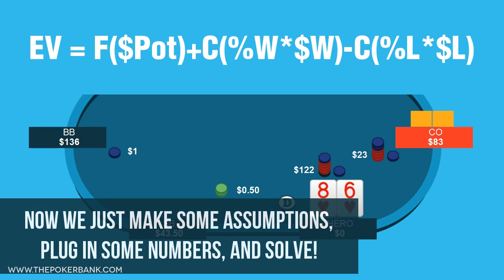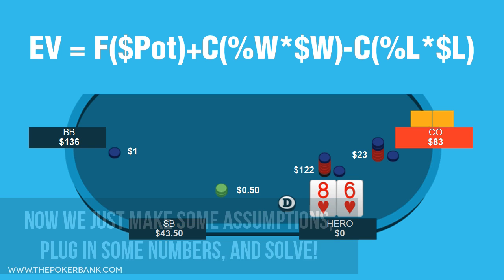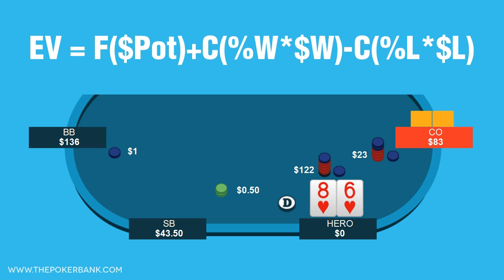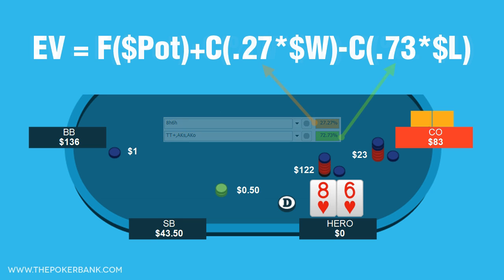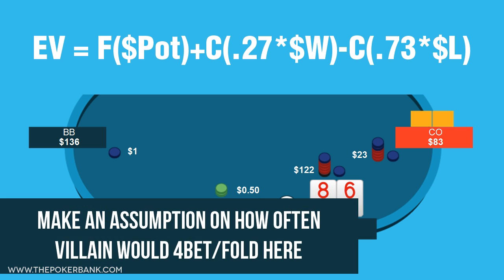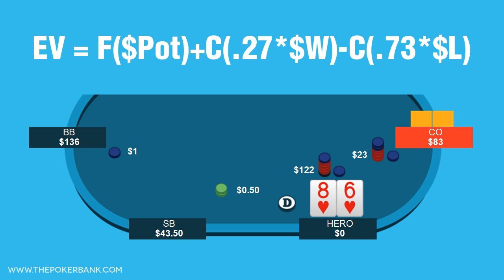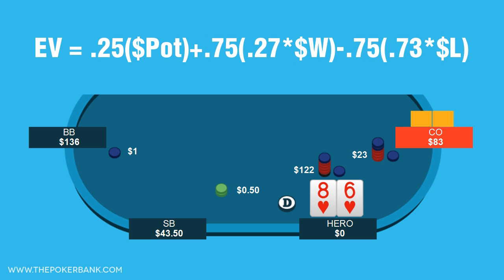Now we just have to make some assumptions on his range and frequencies, plug in some numbers, and prove the validity of this shove. Let's assume villain would call our shove with tens plus, ace-king. In that case we would have 27% equity, so percentage W is 0.27 and percentage L is 0.73. Let's also assume that villain does bluff 4-bet sometimes, so we assume he'll fold 25% of the time. This means F is 0.25 and C is 0.75.